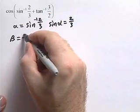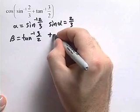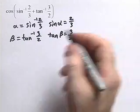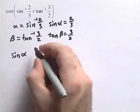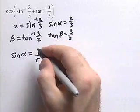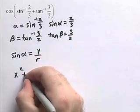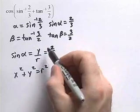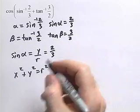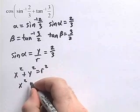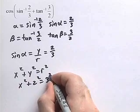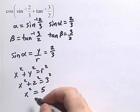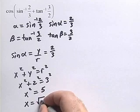We'll let beta equal tangent inverse of 3 halves, which means that the tangent of beta is equal to 3 halves, and beta needs to be in quadrant 1. Since the sine in the circle is y over r, we consider a circle of the form x squared plus y squared equals r squared. For the sine of alpha equal to 2 thirds, we have y is 2 and r is 3. Putting those into our equation gives x squared plus 2 squared equals 3 squared, so x squared is equal to 5. Since we're in quadrant 1, x is positive, so x equals the square root of 5.